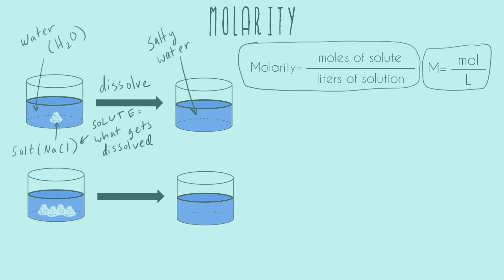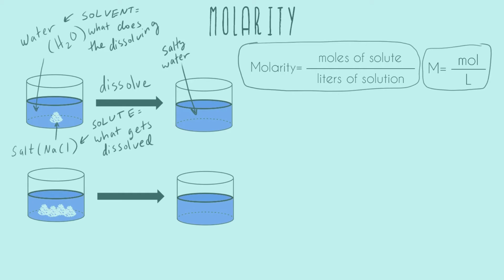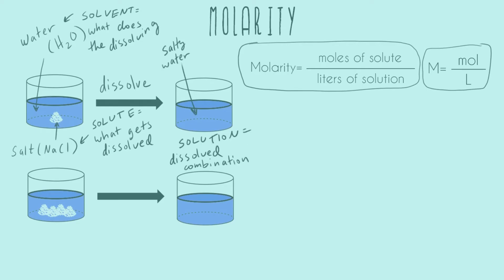What does the dissolving is called the solvent — in this case, that's water. After all the dissolving is done and these two things are completely mixed together, in this case the salty water, that's called the solution. So these are three important vocabulary words: solute — what gets dissolved; solvent — what does the dissolving; and solution — the dissolved combination of both your solute and your solvent.